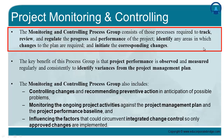For example, the project might be behind schedule — that could be an observation out of the monitoring and controlling process. In order to bring the project back on schedule, you will have to take some corrective actions. Those corrective actions may suggest changes to the staffing management plan, where you decide to put more resources on the project in order to catch up with the lost schedule. However, putting more resources will mean incurring more cost to the project, so there will also be changes to the cost management plan.